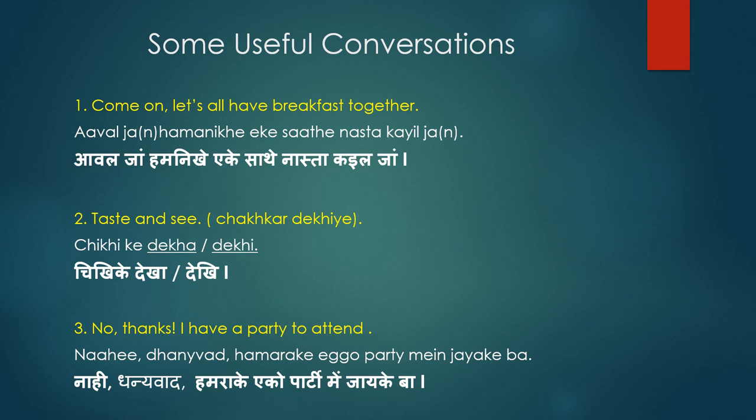The next sentence is: 'No thanks, I have a party to attend.' In Bhojpuri: 'Nahi dhanyavad, hamra ke ego party mein jai ke ba.' Here 'nahi' means no, 'dhanyavad' means thanks, 'hamra ke' means for me — there is no singular 'may' in Bhojpuri — and 'ego party mein jai ke ba' means I have to attend or go to a party. Note that 'ek' becomes 'ego' while speaking.